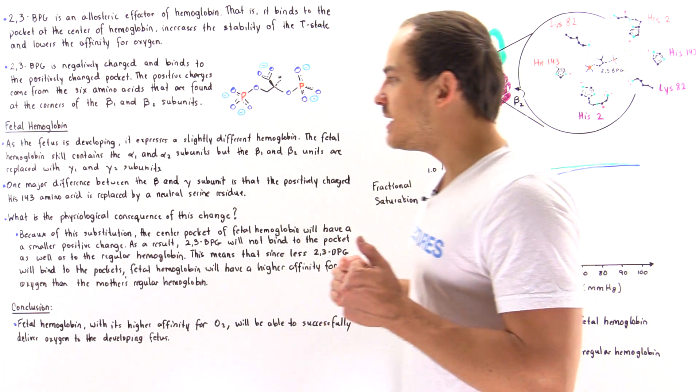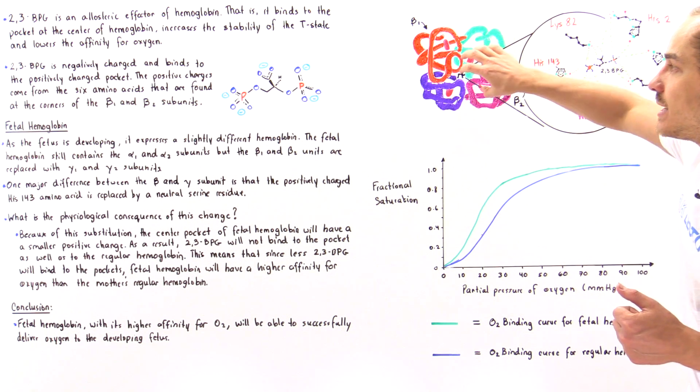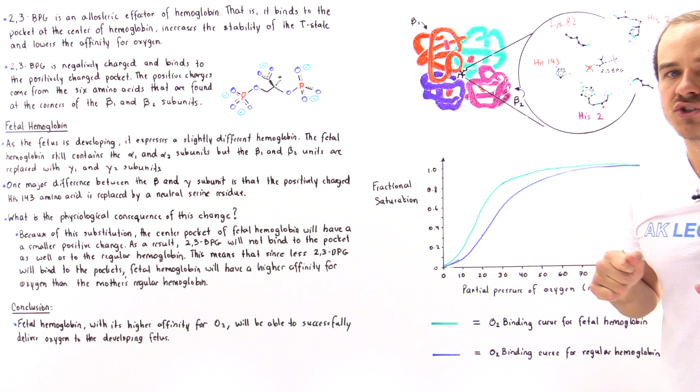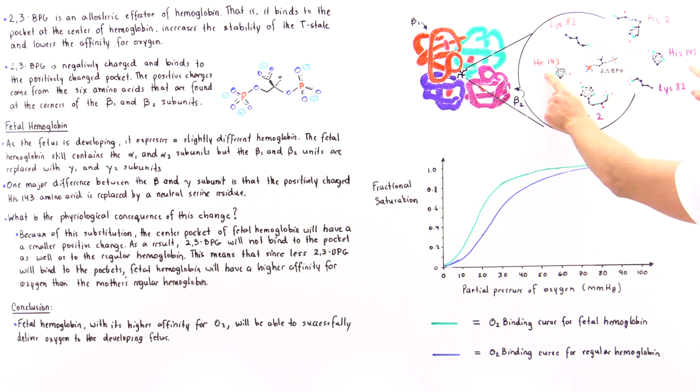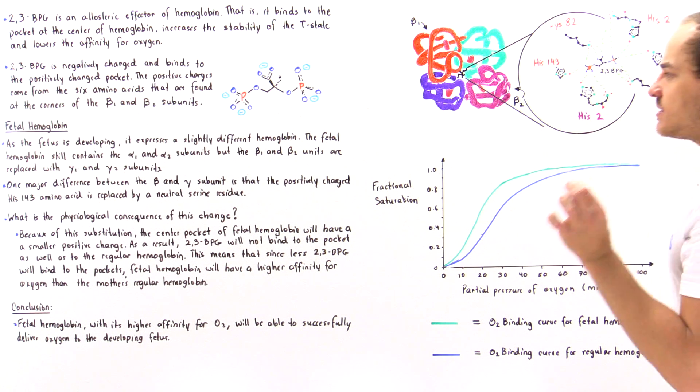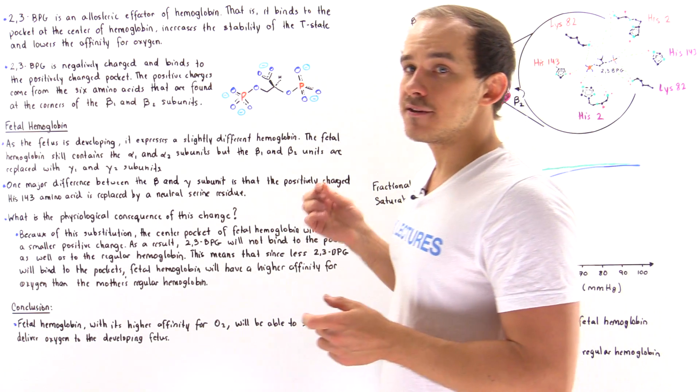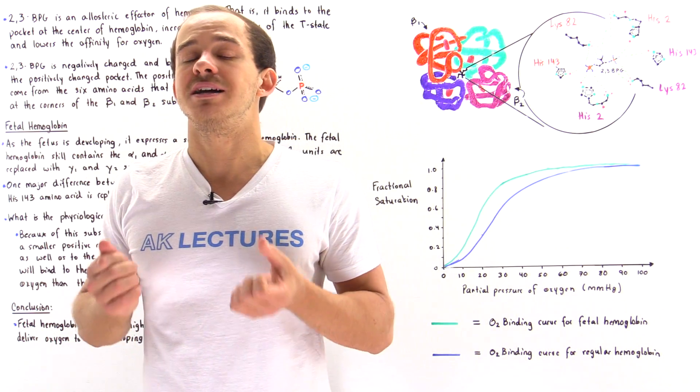What that means is, in the pocket of fetal hemoglobin, there is a smaller positive charge. Because these two histidines, histidine-143 on this subunit and histidine-143 on this subunit, are replaced with serine. Instead of having a positive 6 charge, we essentially have a positive 4 charge, a smaller positive charge.